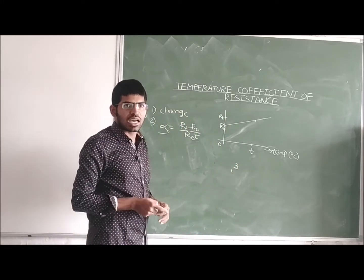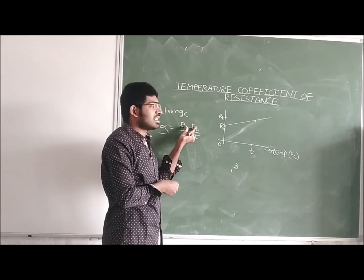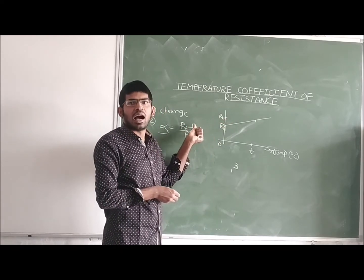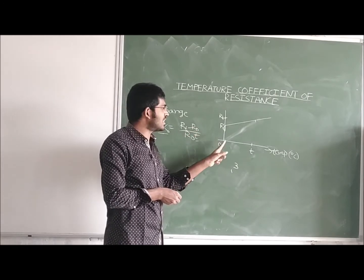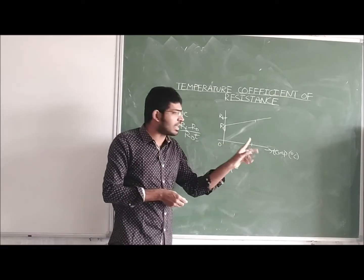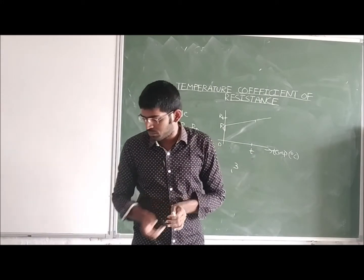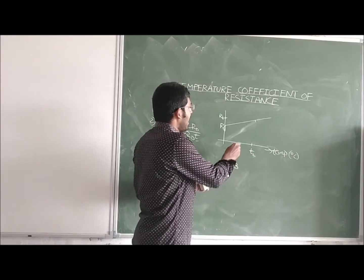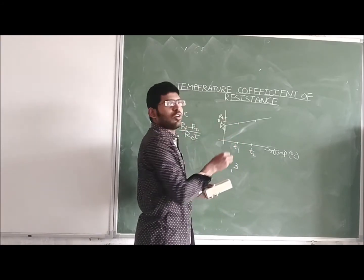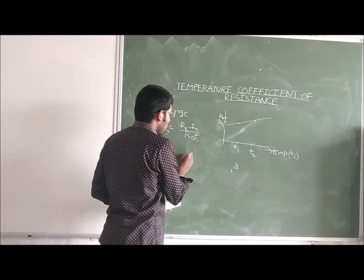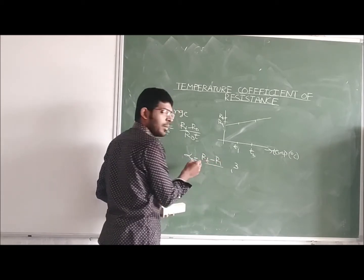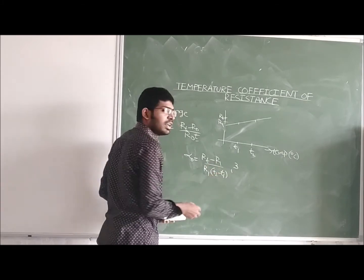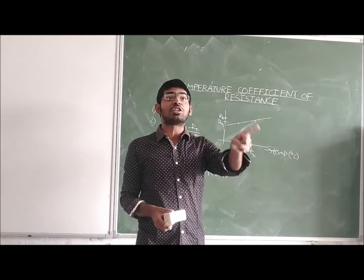The temperature coefficient of resistance alpha naught is the ratio of the change in resistance to the product of the initial resistance and the rise in temperature. For example, changing from T1 to T2, where the resistance at T1 is R1, then alpha naught equals (R_T minus R1) divided by (R1 × (T2 minus T1)). This gives the temperature coefficient of a material.